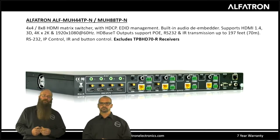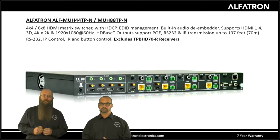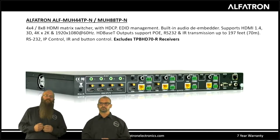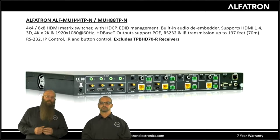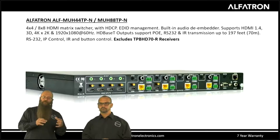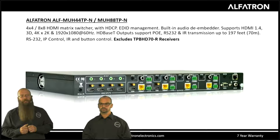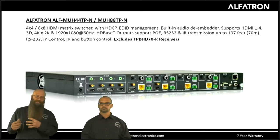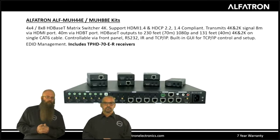This makes it perfect for AV signals needed at far-away displays — talking about HDBaseT — and of course on multiple displays which may need different information on different screens in different zones or departments. The Alphatron ALF MUH 88 TPN features the same abilities as the ALF MUH 44 TPN, just with eight inputs and eight outputs for larger installs.